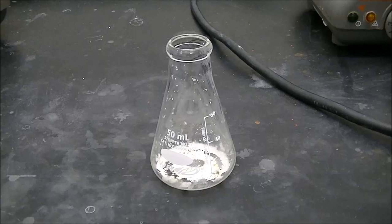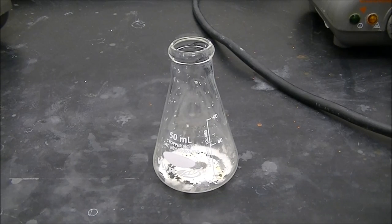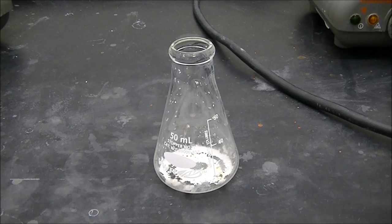Once the methylene chloride has evaporated, you'll have solid left in the bottom of your Erlenmeyer flask. Measure the mass, calculate your percent yield, and run an IR.